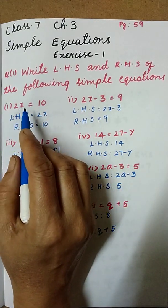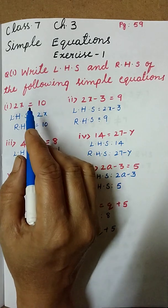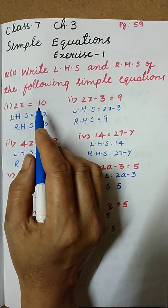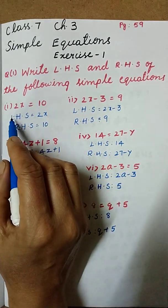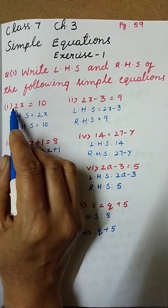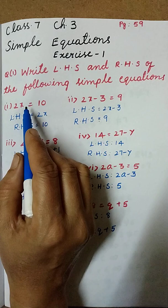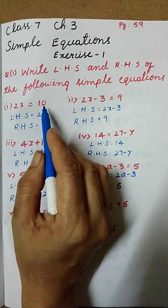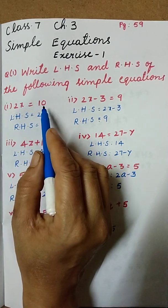Here first one is 2x equal to 10, which is in our left hand side, that is the LHS, left hand side. Where is our left hand side? This side, 2x. So 2x is the LHS and 10 is here right hand side. So 10 is the RHS.